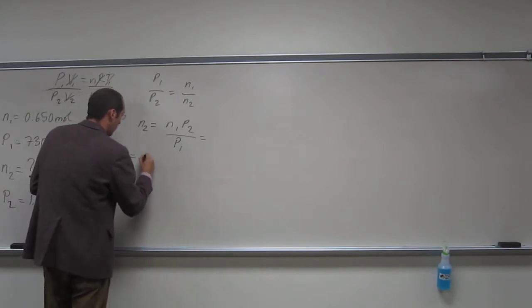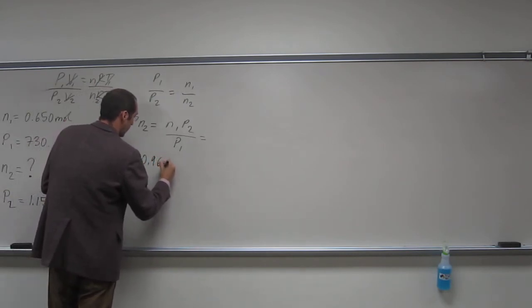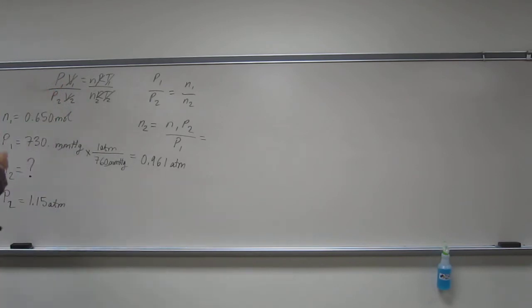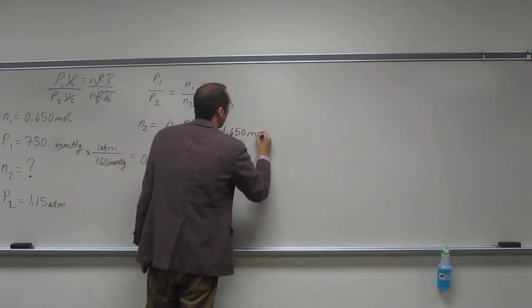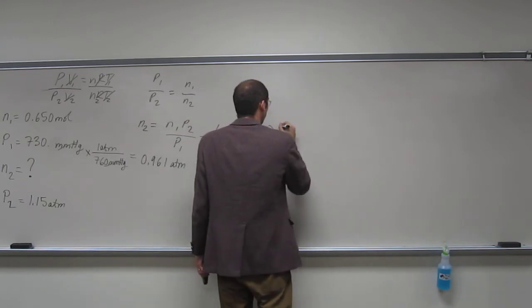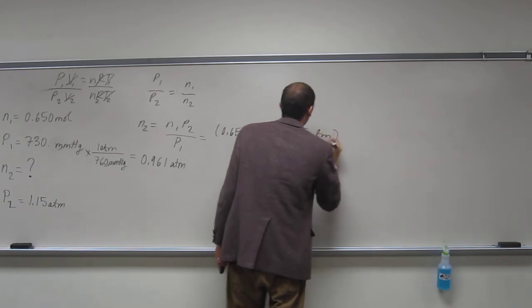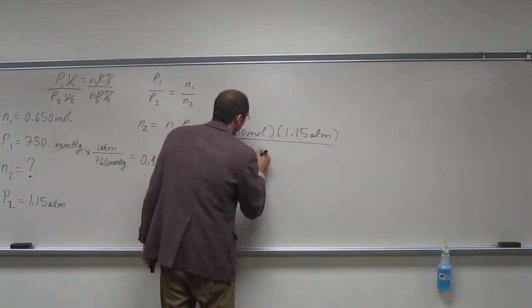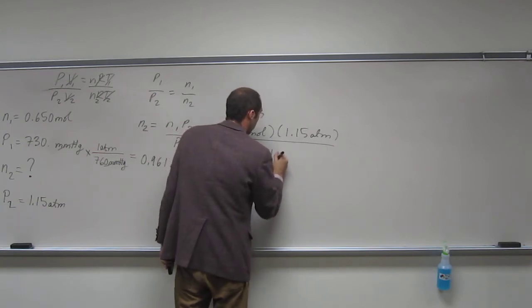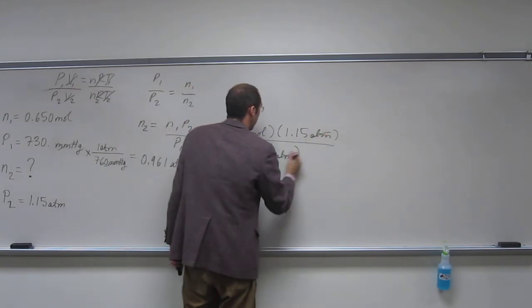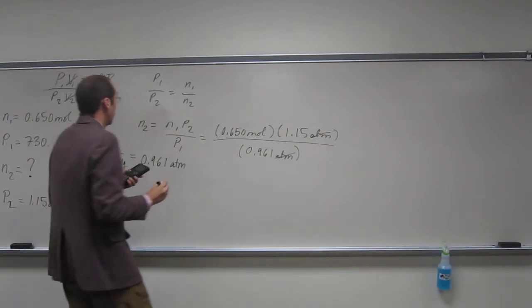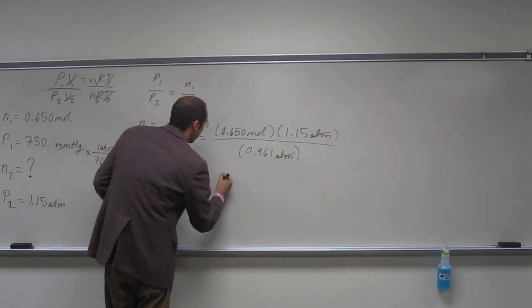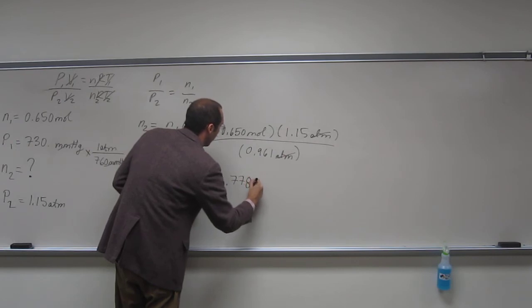Okay, so when we do that, we get 0.961 atm. So, we have the initial pressure, final pressure, and the initial number of moles. 1.15 atm divided by 0.961 atm, atm cancels. So, I got n2 as 0.778 moles.